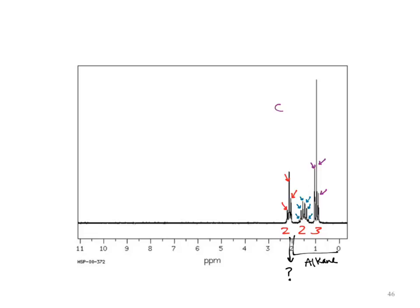So I have a carbon bound to a hydrogen — there are three of them. For the next one, I have a carbon bound to a hydrogen. And the next one has two hydrogens. For that last signal, I don't know that it is carbon necessarily yet based on the analysis, so I'll leave that alone.